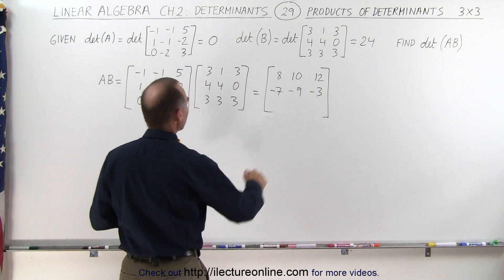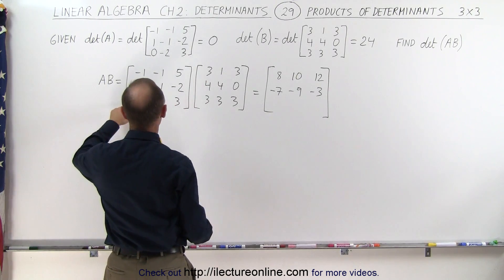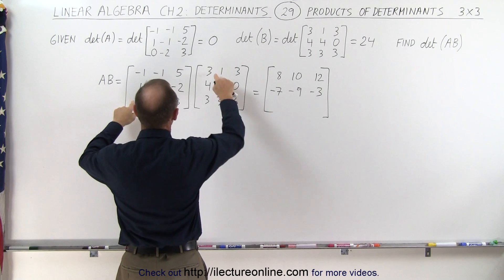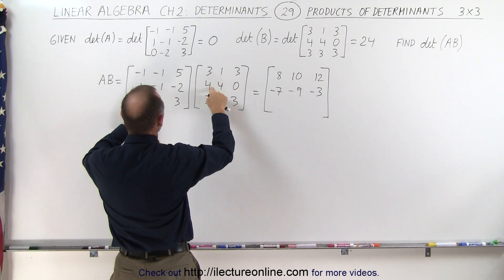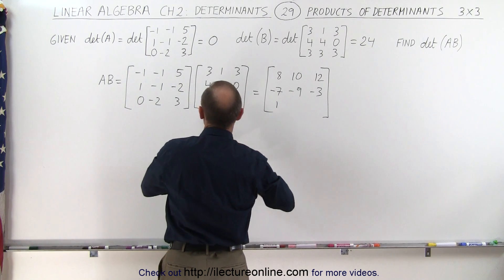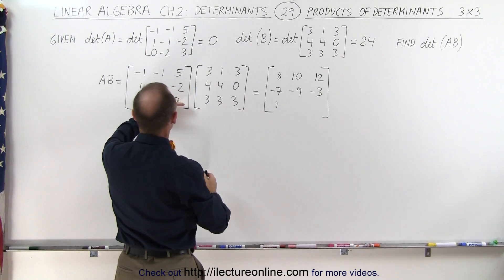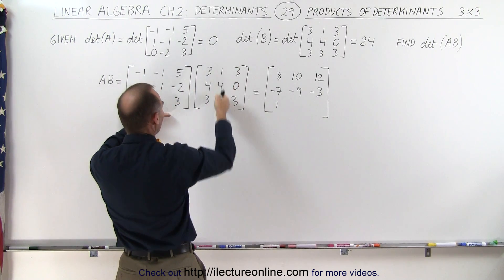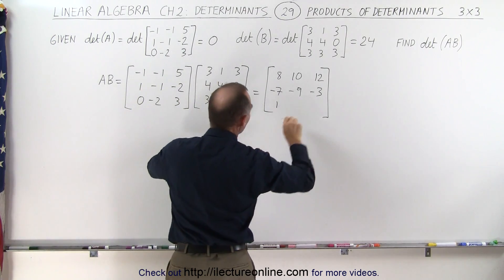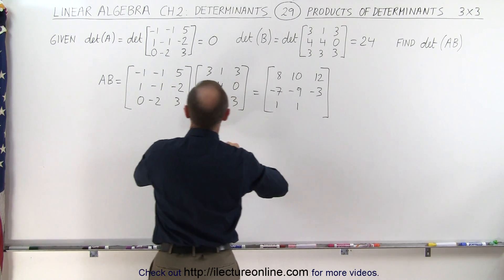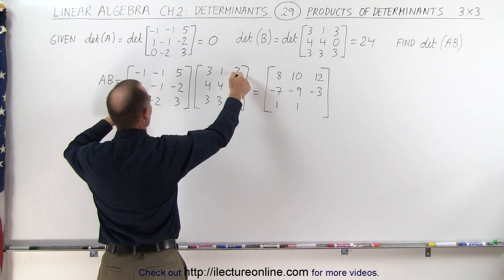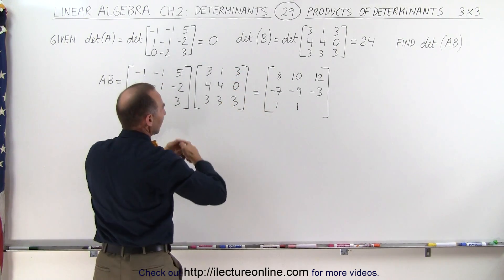Now for the third row. We take this row and multiply times this column to get the first element: that's 0, minus 8, plus 9, that gives us 1. For the second element, third row, second column: 0, minus 8, plus 9, that gives us 1. And finally for the last element, third row, third column: we get 0, plus 0, plus 9.